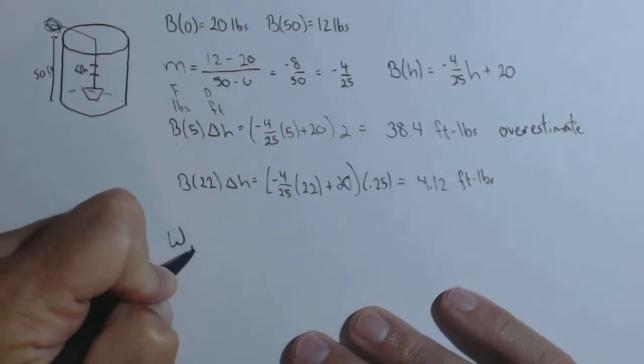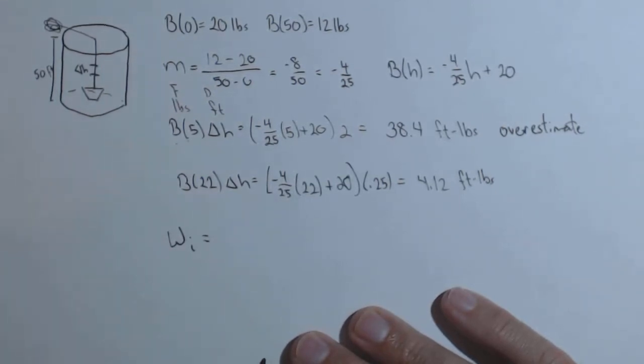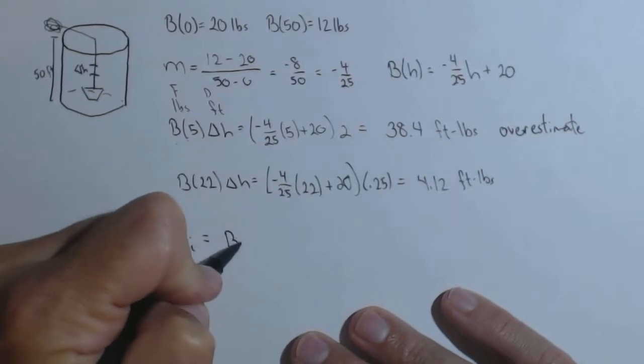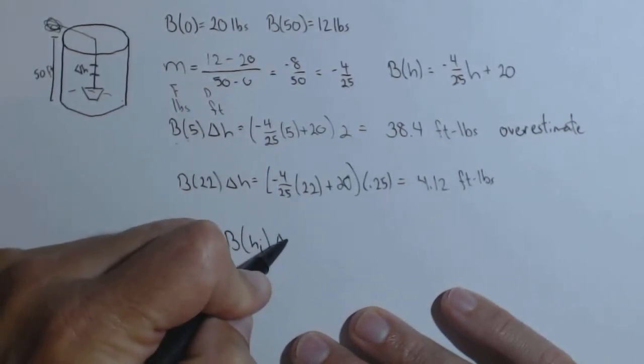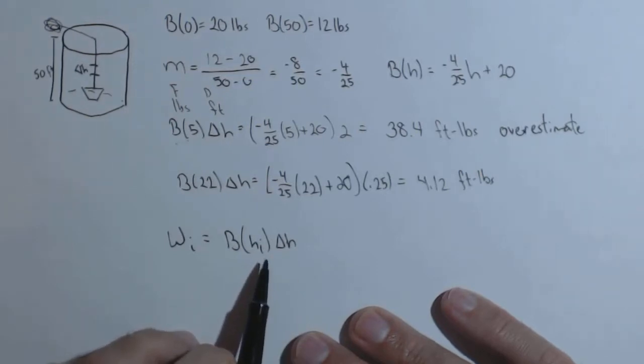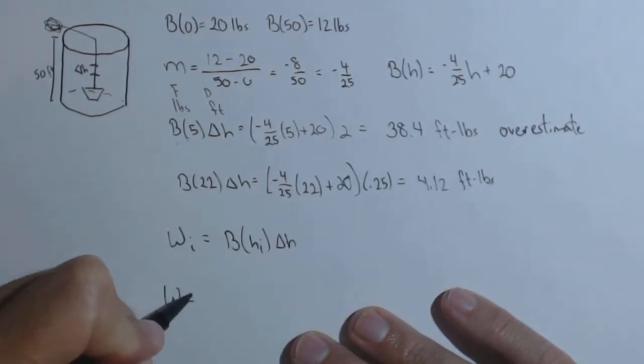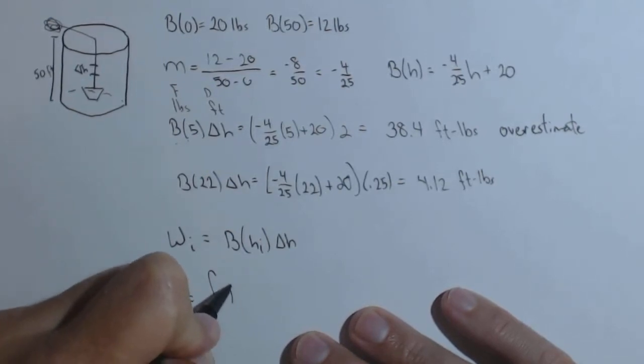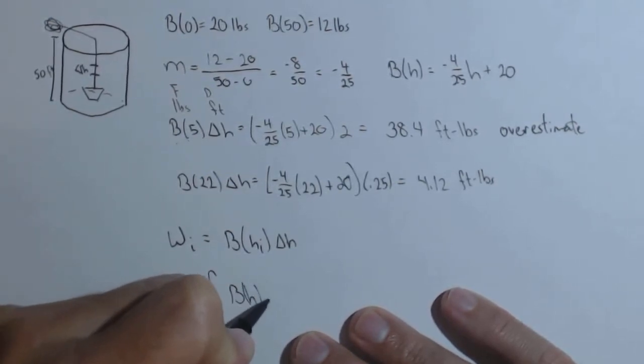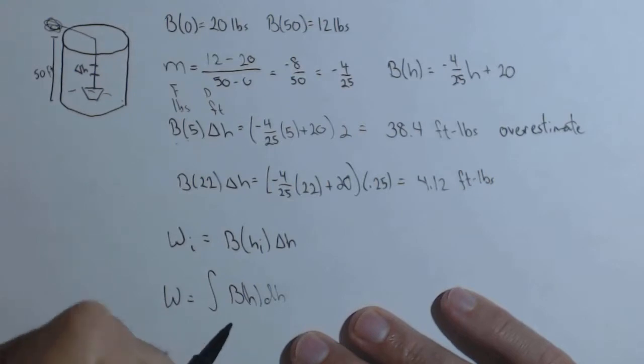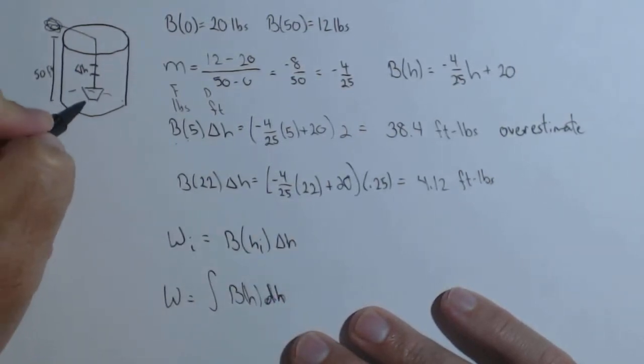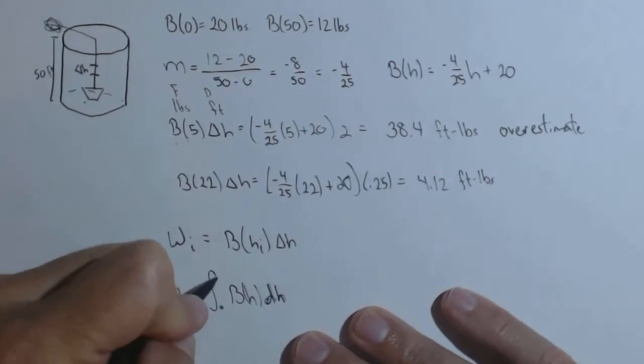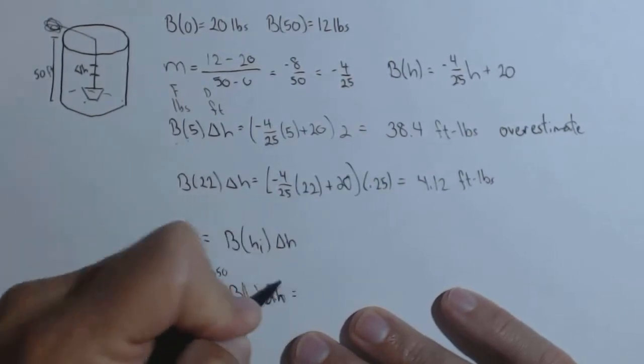And what we're actually doing is we're looking at the ith slice. So the work on the ith slice is the force on the ith slice times the distance we're moving the ith slice. And what we know from our past work is this means the work is going to be the definite integral of B(h) dh integrated over all the possible heights. Well, the height can go from 0 up to 50, so those are going to be our limits.